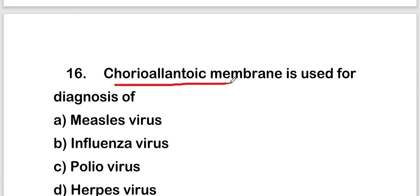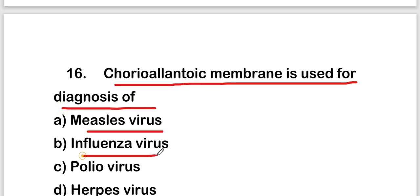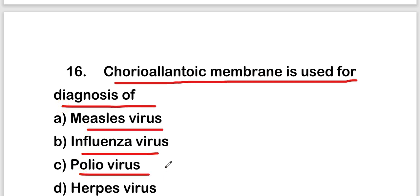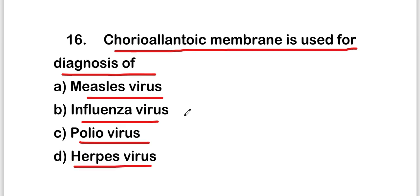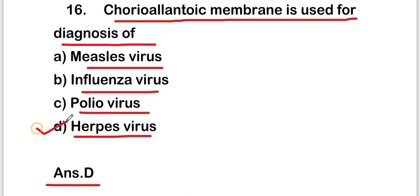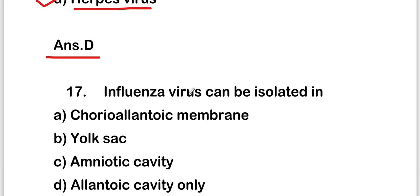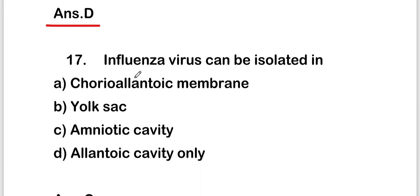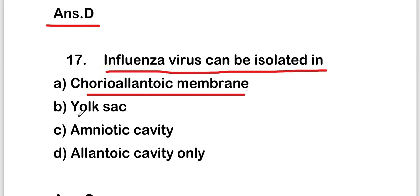The next question is: chorioallantoic membrane is used for the diagnosis of which virus — measles, influenza, polio, or herpes virus? The right answer is option D — chorioallantoic membrane is used for the diagnosis of herpes virus.